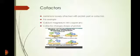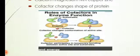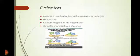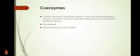Next, if we talk about cofactors: metal ions loosely attached with the protein part are cofactors — for example, calcium, magnesium, manganese, copper, and zinc. Cofactors change the shape of the protein. The role of a cofactor in enzyme function is that it changes the confirmation of the active site of the enzyme. A cofactor — shown like a coin in the diagram — binds to the enzyme, and the cofactor participates in temporary bonding between the active site and the substrate. After the product is formed, the cofactor is removed.